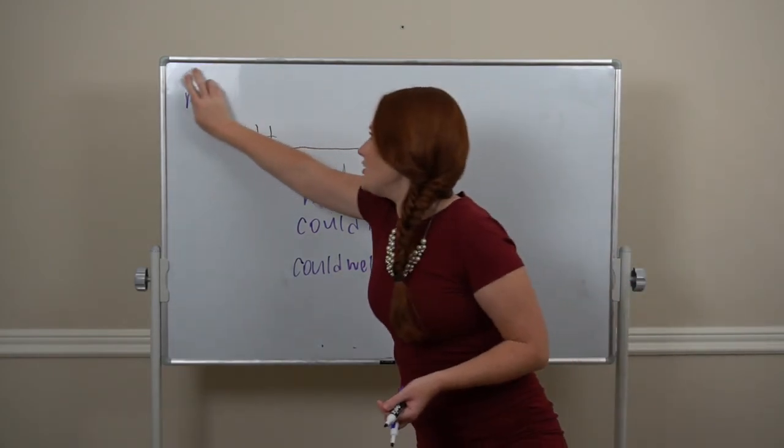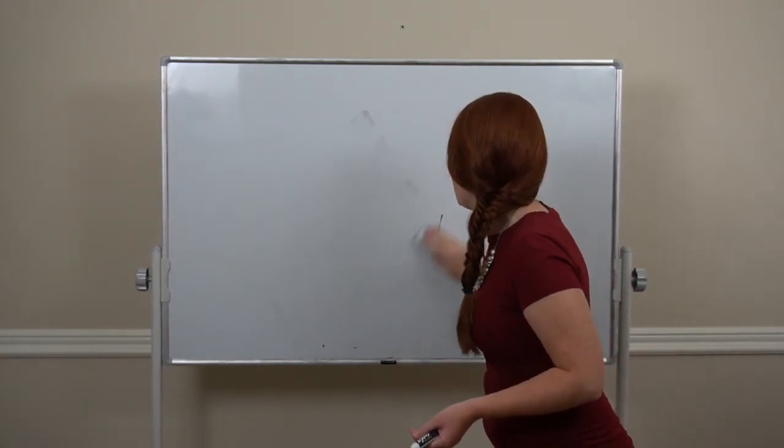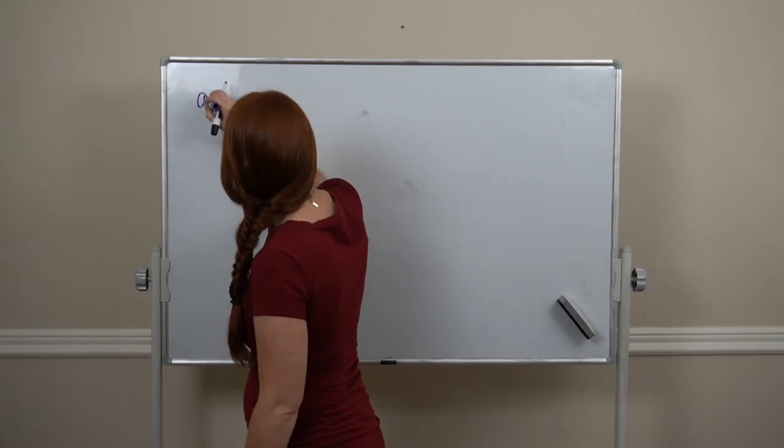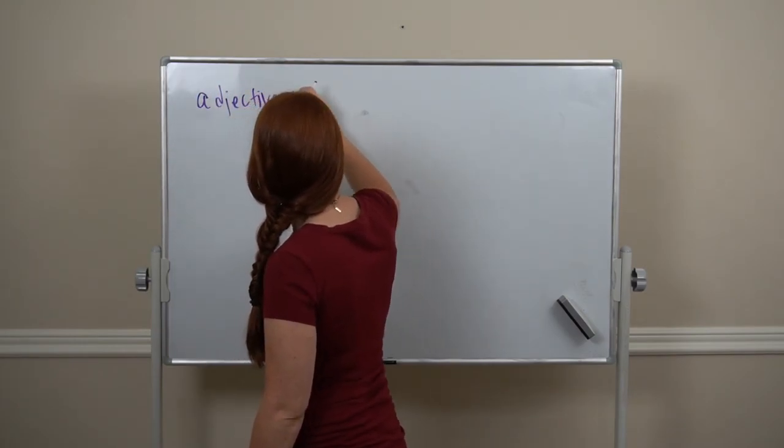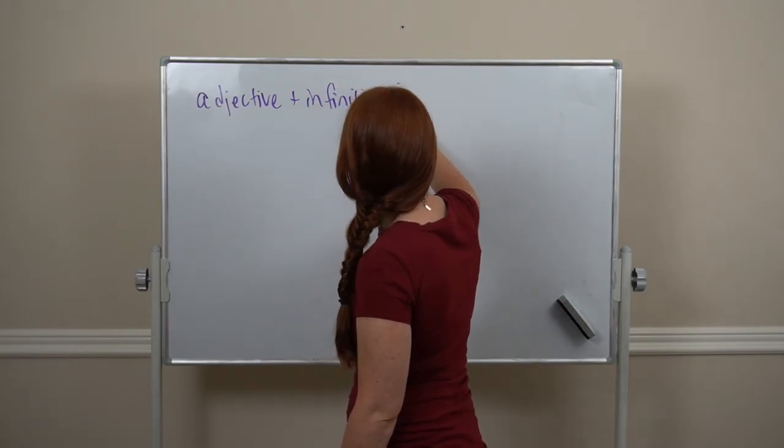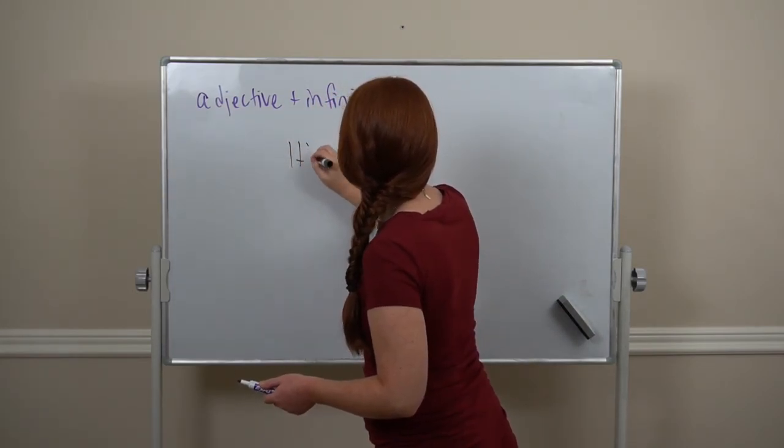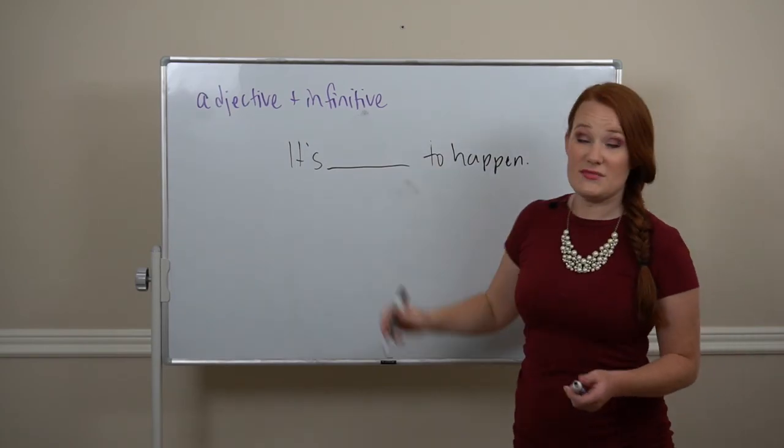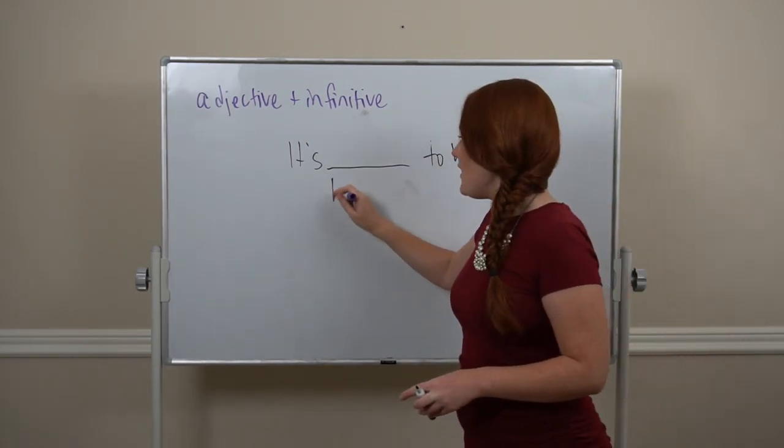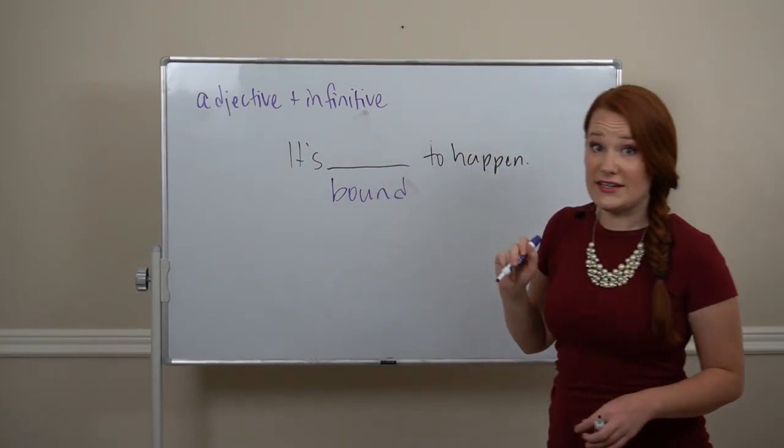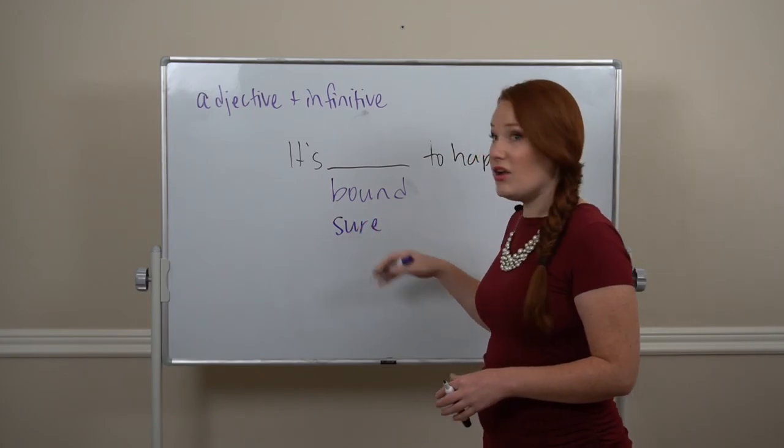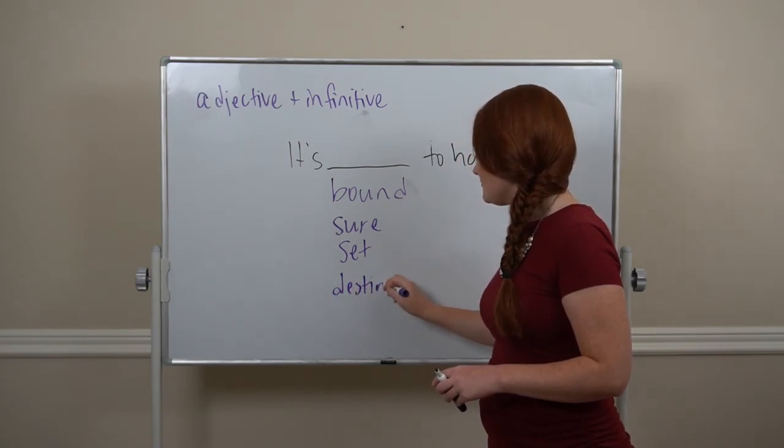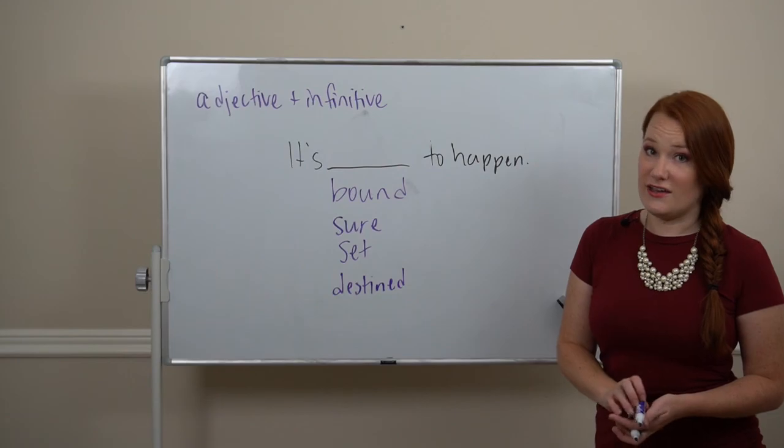For our last category, we'll do some adjectives with infinitives. Our infinitive adjective will be to happen. And we can put in some different adjectives in there. I can say it's bound to happen. It means it's very likely. Or it's sure to happen. Also very likely. It's set to happen. It's destined to happen. These are all pretty confident that something will occur.